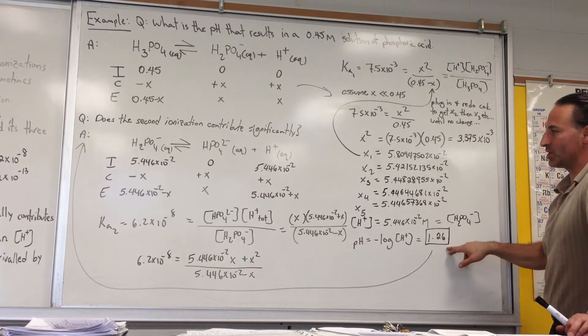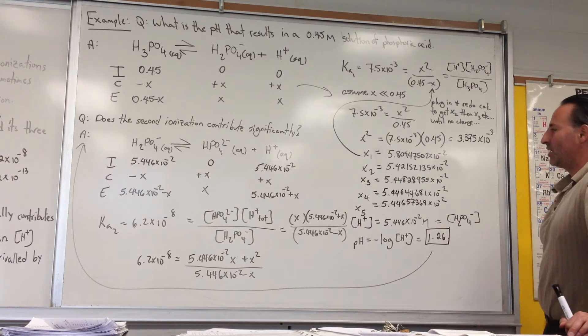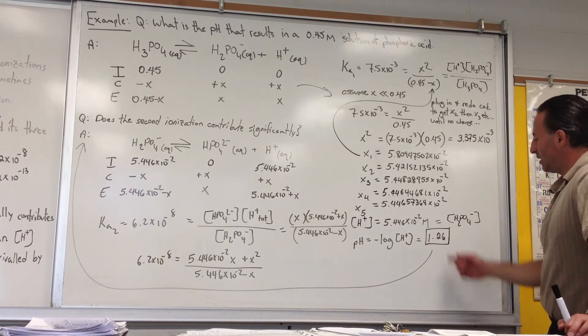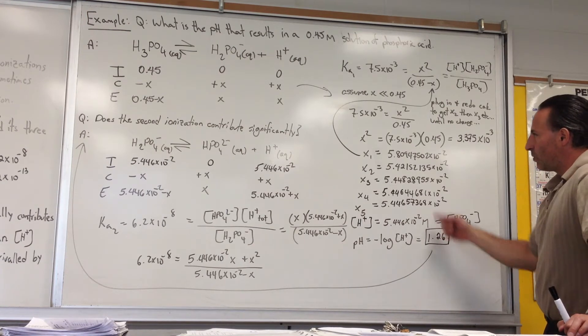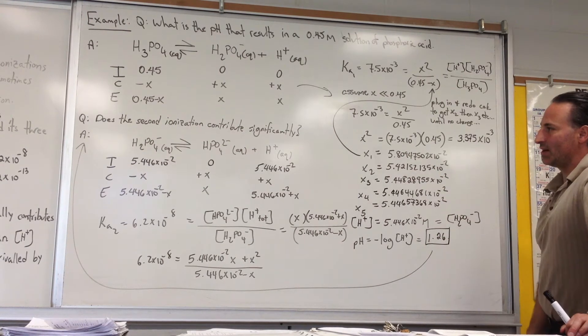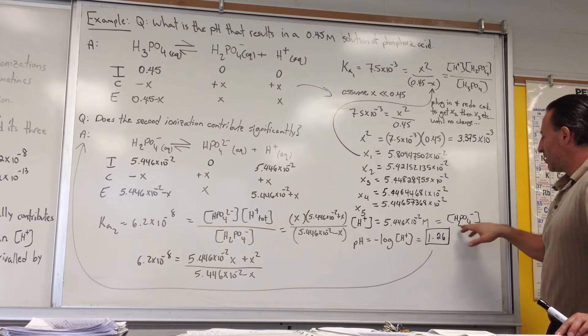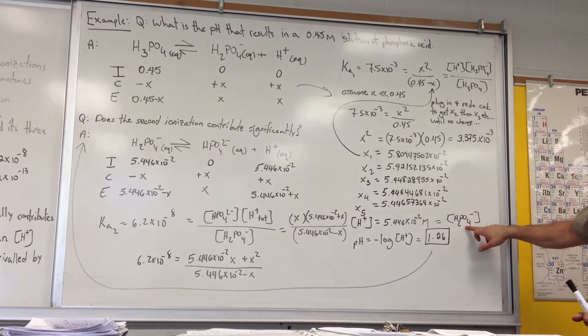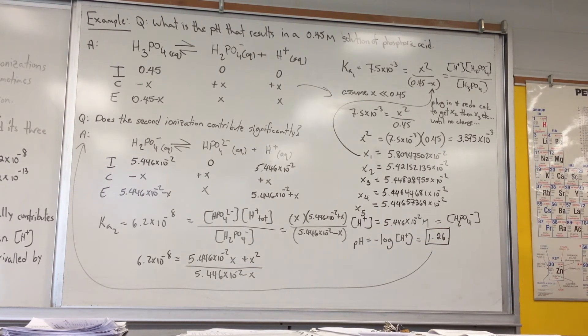When I take that 5.446 times 10 to the minus 2 and plug it into the pH calculation I get a pH of 1.26. Now to satisfy our curiosity I wanted to see what would be the effect of the second ionization.